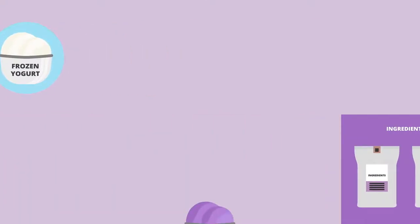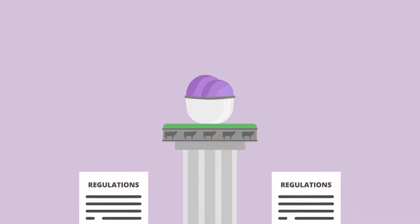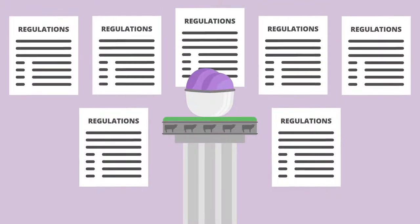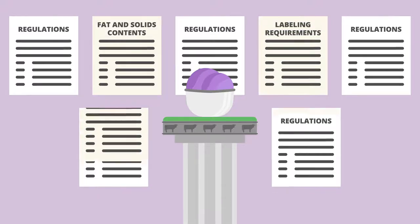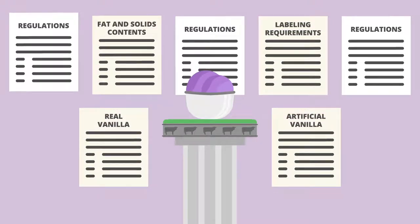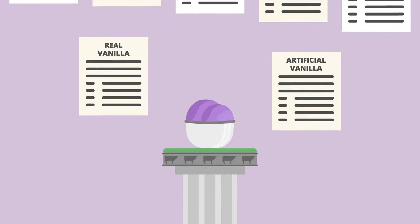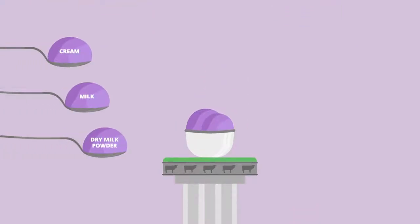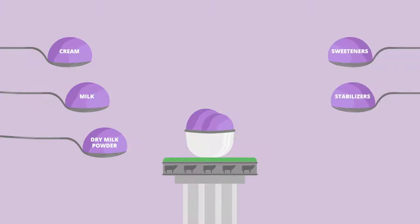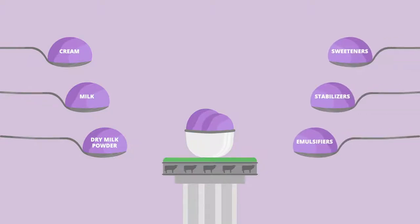There are regulations specific to frozen desserts that the manufacturer needs to know, such as fat and solids contents and labeling requirements for real and artificial vanilla flavorings. Dairy ingredients used in frozen desserts are cream, milk, and dry milk powder. Other ingredients include sweeteners and stabilizers and emulsifiers to improve texture.